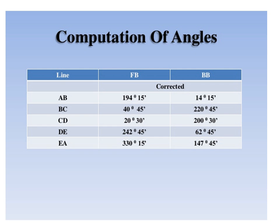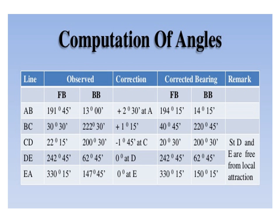This is a problem related to compass surveying in which the traverse was a closed traverse and the corrected bearings were calculated as shown in the table. This particular table shows observed and corrected bearings along with the correction at each particular station.